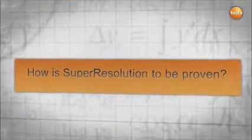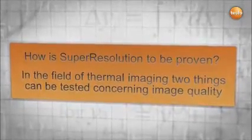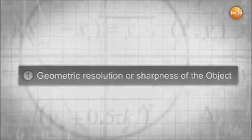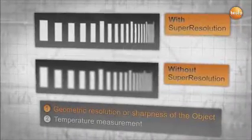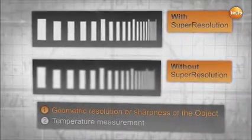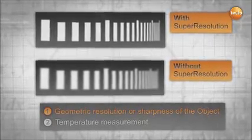But how can super-resolution be proven? In the field of thermal imaging, there are two factors that play an important role in the quality. These are geometric resolution, or sharpness of the object, and precision of the temperature measurement. The difference is clearly seen in this test. A gobo with vertical slots of different widths and distances is placed in front of a black body that has a certain temperature.